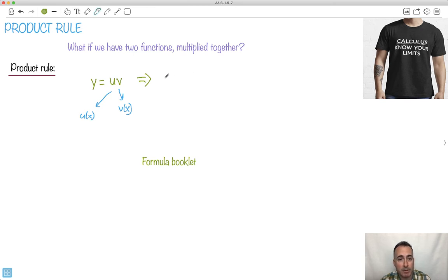On your formula book, they write it like this: they say if y equals uv, then dy/dx equals u dv/dx plus v du/dx. This is the official formula, this is what you get in your formula booklet.